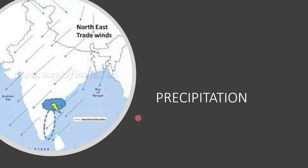During the winter season, the winds blow from land to sea and do not bring much rainfall. However, when these winds blow over the Bay of Bengal, they cause winter rainfall in the eastern part of Tamil Nadu, the southeastern part of Karnataka, and the southeastern part of Kerala.